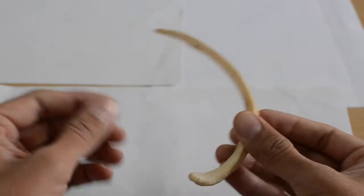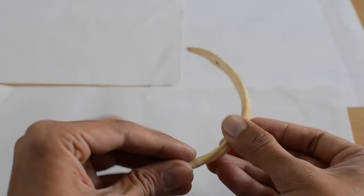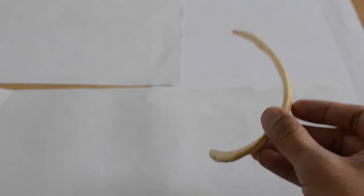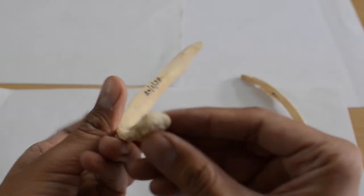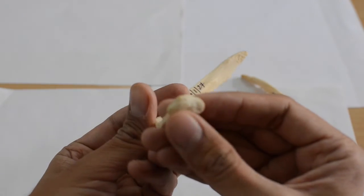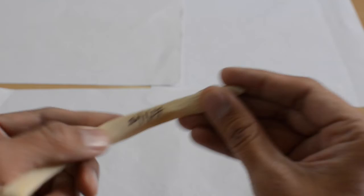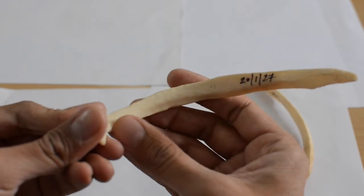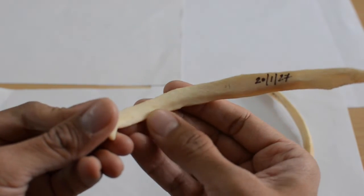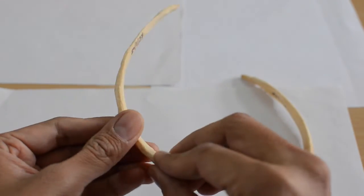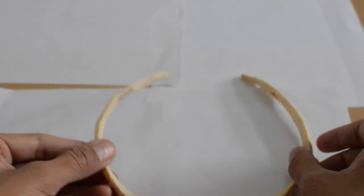Similarly, I have got the left 11th rib. So here you can see this is the posterior end with a coastal facet, this is the pointed anterior end, and along the inner surface there is a faint coastal groove. With that, you can determine the side of the given rib. So this is the left 11th rib.